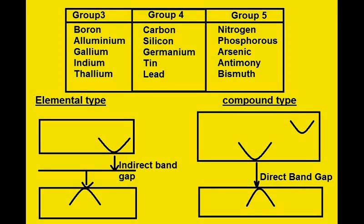Gallium arsenide is a compound semiconductor combining third and fifth group elements — gallium (group III) and arsenide (group V). In these compound semiconductors, electron transition takes place directly from the central valley to the valence band, and the emitted radiation is in the form of light. This makes them suitable for optoelectronic devices like LEDs.